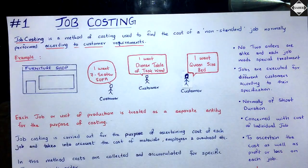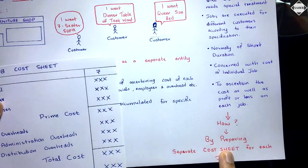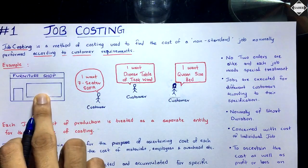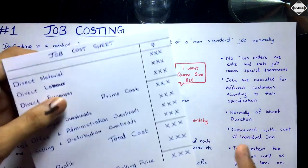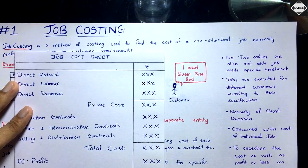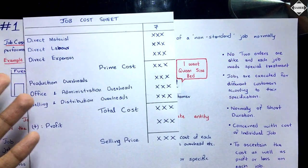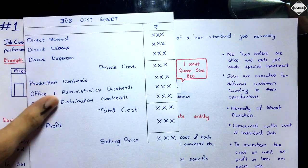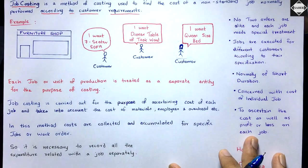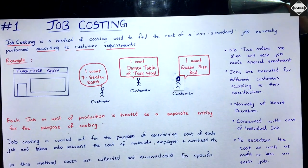We ascertain the cost and profit or loss on each job by preparing a separate cost sheet for each job — not for the entire business. If a question has two or three jobs, you prepare one column per job. We'll go directly to problems in the next video. Just remember: job costing is according to customer requirements. See you in the next video!